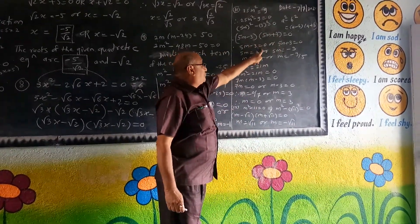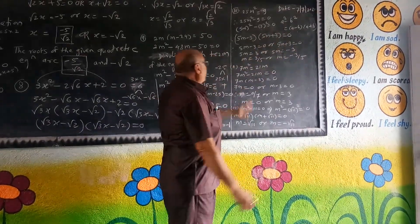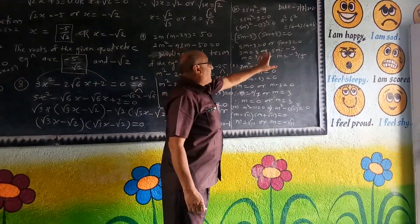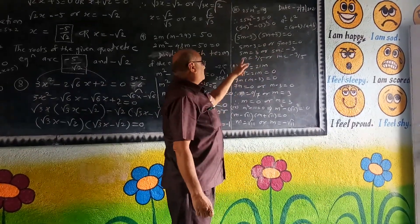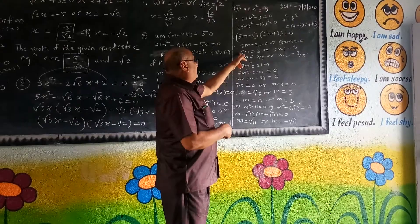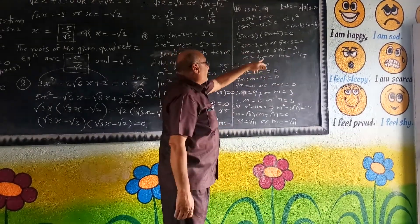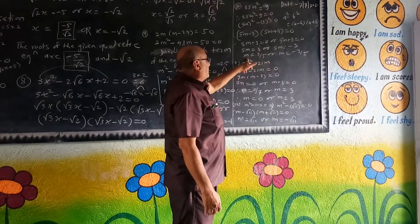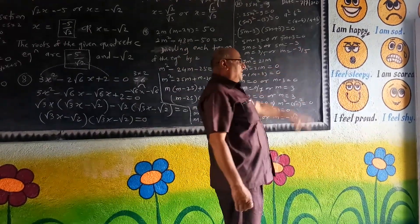Therefore 5m minus 3 equals 0 or 5m plus 3 equals 0. So 5m equals 3, meaning m equals 3 by 5, or 5m equals minus 3, meaning m equals minus 3 by 5. These are the roots of the given equation.